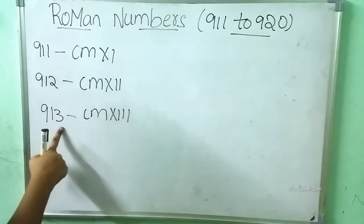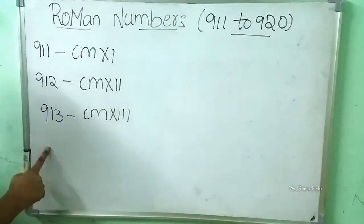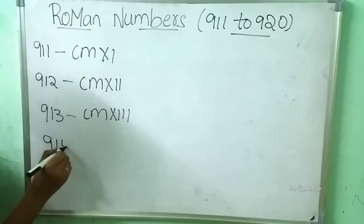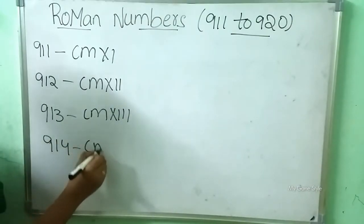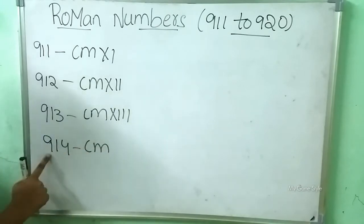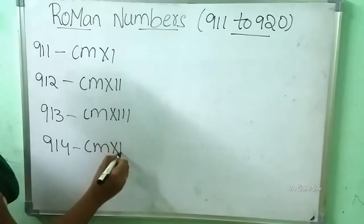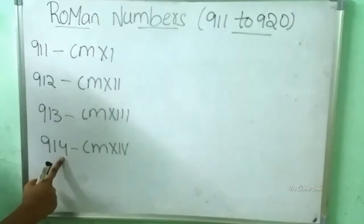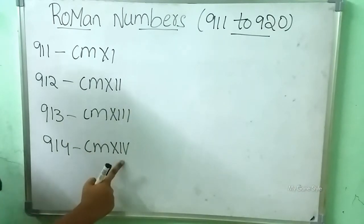After 913, what number will come? 914. Now how to write? CM is 900. XIV is 14. So this means 914, written as CMXIV.